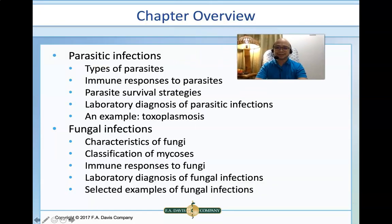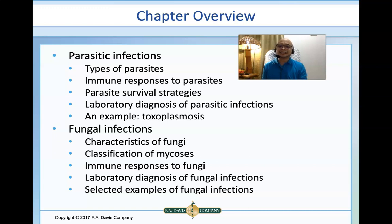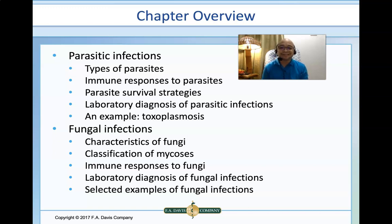As a chapter review, we will be dividing this session into two major parts. The first part will be about parasitic infections, wherein we will review the types of parasites where serologic and molecular diagnostic tests would be applicable, the immune response to parasites, parasite survival strategies, and the laboratory diagnosis of various parasitic examples such as toxoplasmosis. For fungal infections, we will review the different characteristics of fungi, the classification of mycosis, immune responses to fungi, laboratory diagnosis of fungal infections, and selected examples of fungal infections.